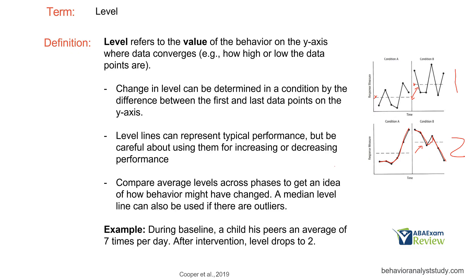Take your time when doing visual analysis so we get the whole picture. For example, during baseline a child hits peers an average of seven times per day; after intervention, the level drops to two. Think of level as a good way to look at your typical performance. Use your other strategies and analyses to think about increasing or decreasing performance depending on what kind of level line you're using.